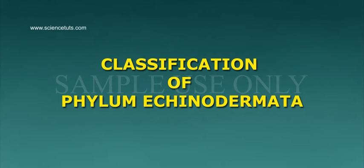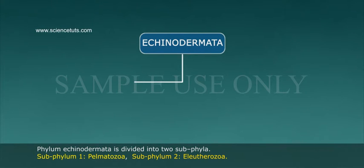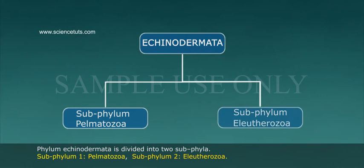Classification of Phylum Echinodermata. Phylum Echinodermata is divided into two subphyla: Subphylum 1, Pelmatozoa, and Subphylum 2, Eleutherozoa.